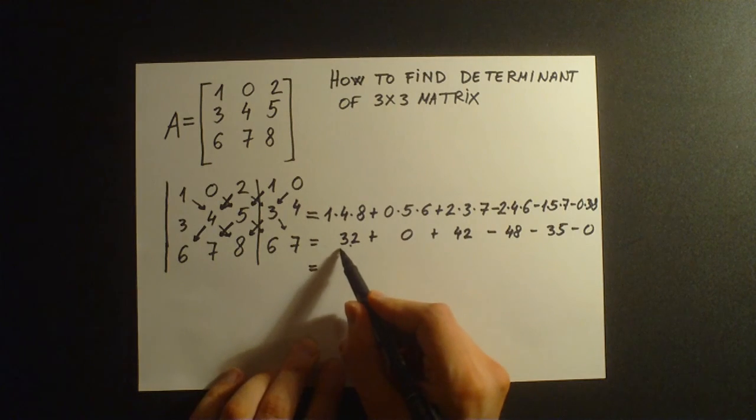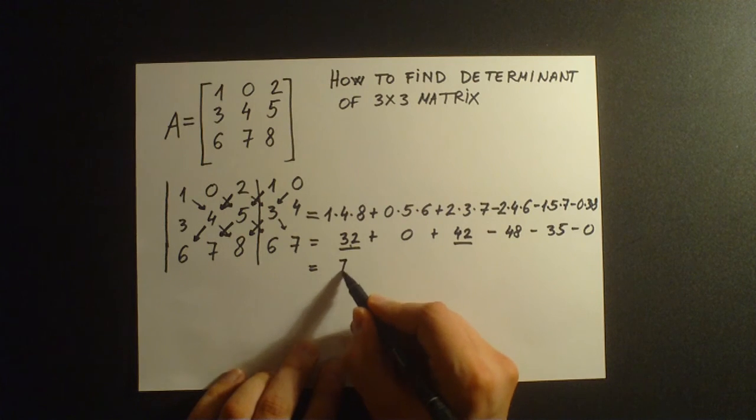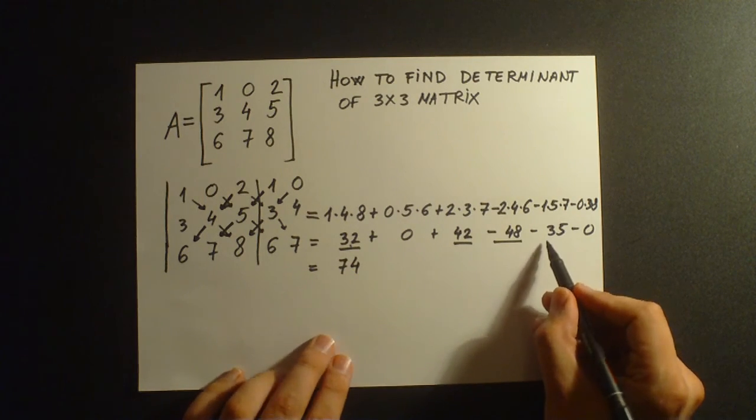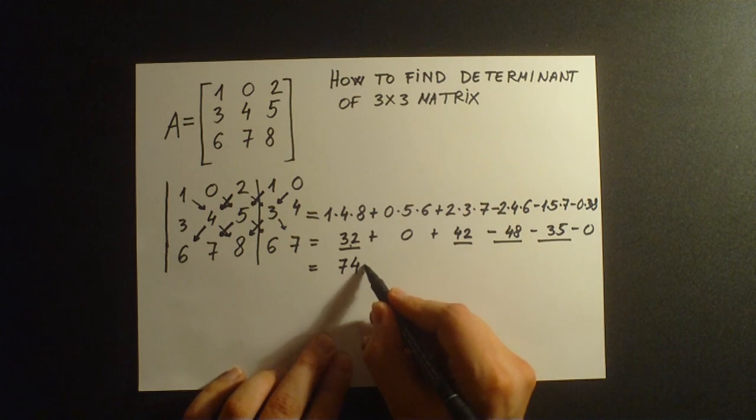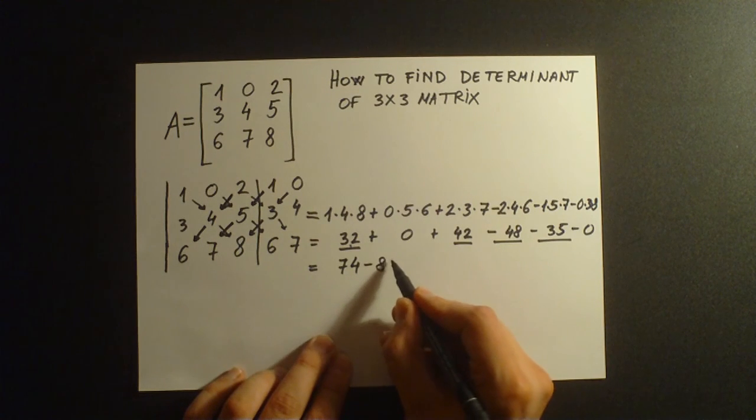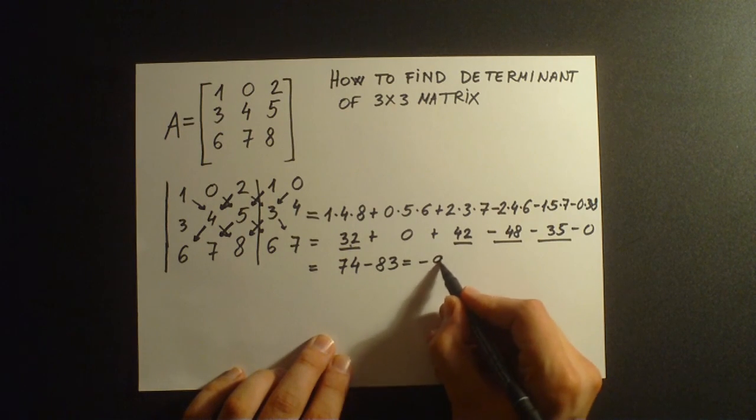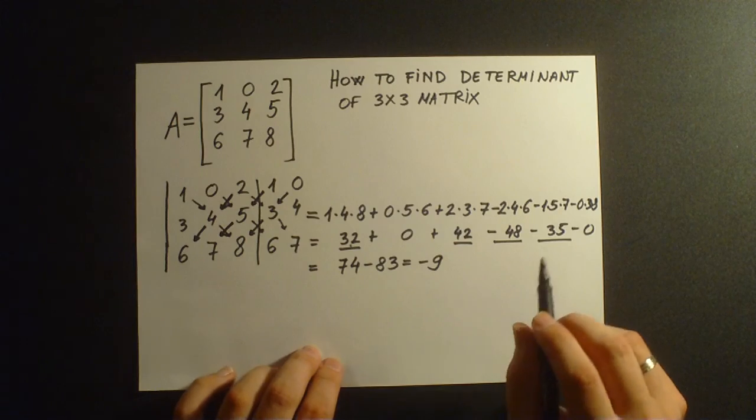So what we have here: 32 plus 42 equals 74, minus 48, minus 35, minus 83. The result is minus 9. Thanks for watching.